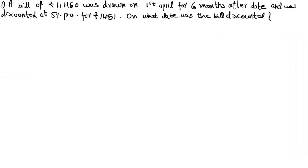Good morning students. In this session I will solve some important 3 and 5 marks questions. See the first question: a bill of Rs.1460 was drawn on 1st April. Year is not mentioned. For 6 months — that means bill period equal to 6 months after date — and was discounted at 5% per annum for Rs.1451, that means the discounted value is also given. On what date was the bill discounted?